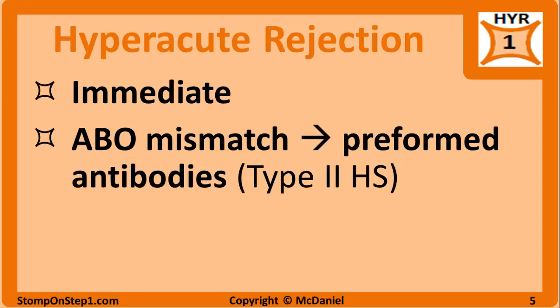Hyperacute rejection is extremely rare now and doesn't happen very often, but it could still occasionally appear on test questions. The reason it happens so quickly is because the body has preformed antibodies against the donated tissue. For example, a recipient with type B blood would have pre-made antibodies targeted at the carbohydrates on type A donor blood. The presence of preformed antibodies means we don't have to waste time making new antibodies — they're already ready to go. This is an example of type II hypersensitivity, because it is antibody-mediated cytotoxicity.